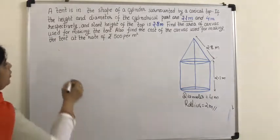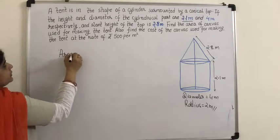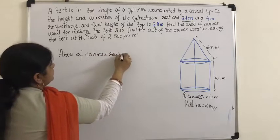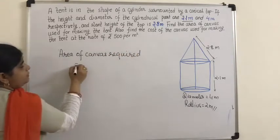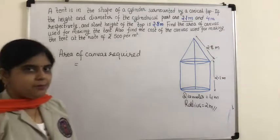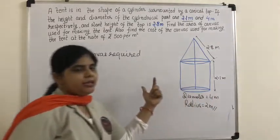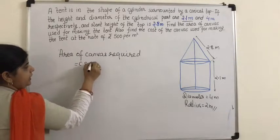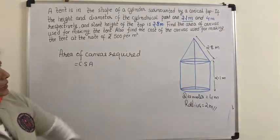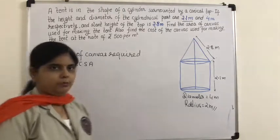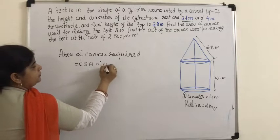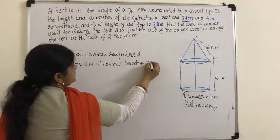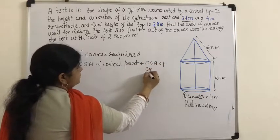So we can write: area of canvas required = curved surface area of the cylindrical part + curved surface area of the conical part.